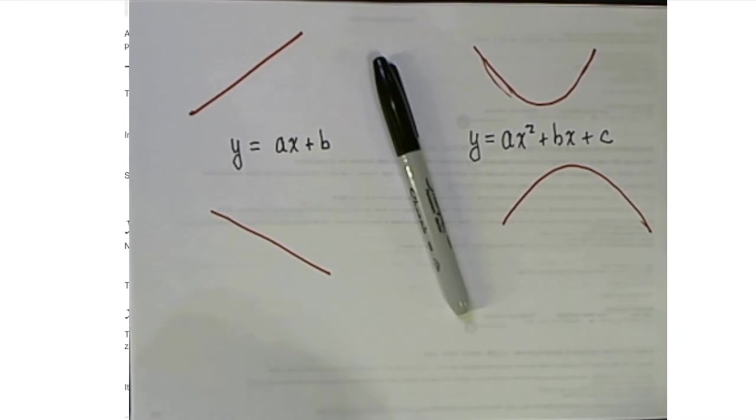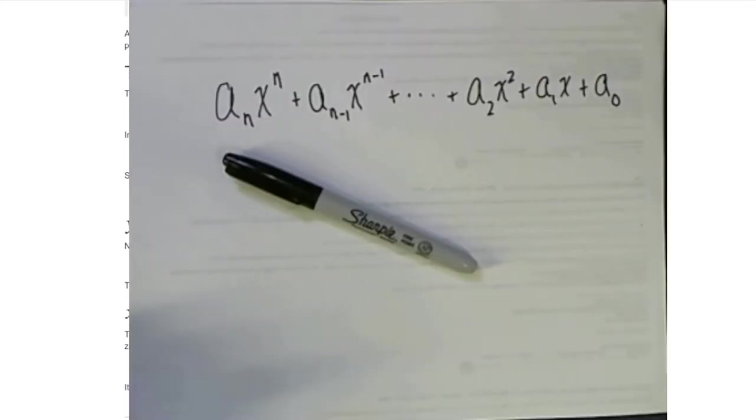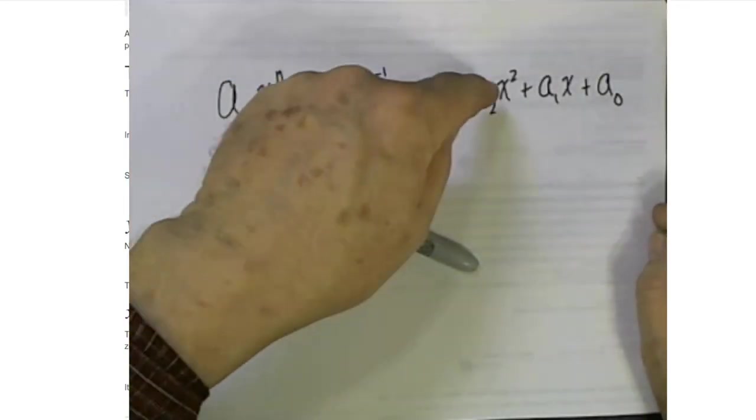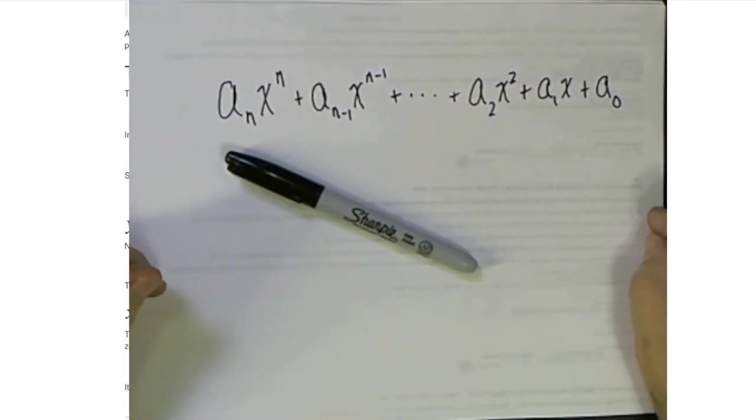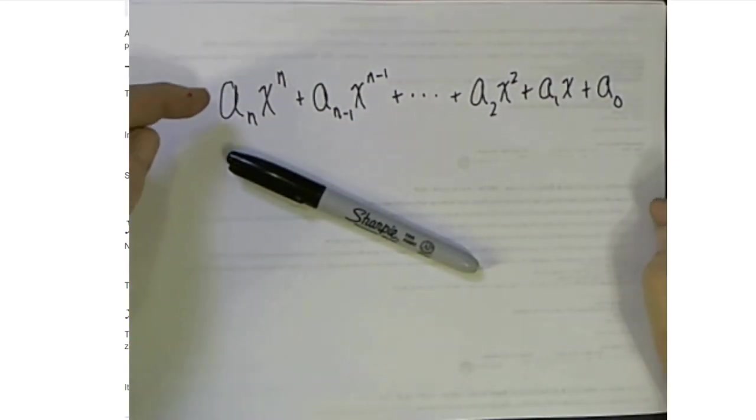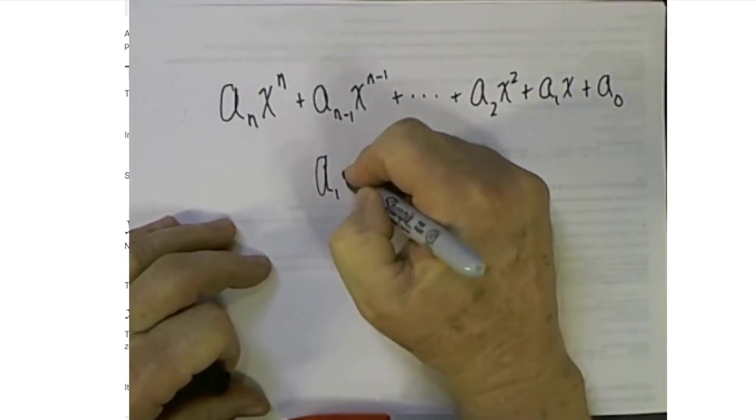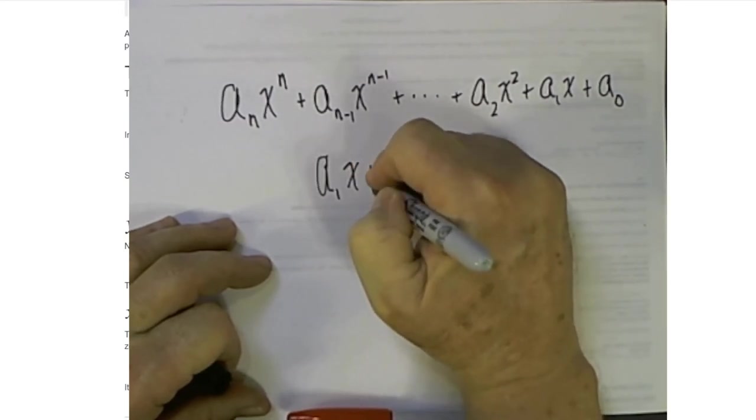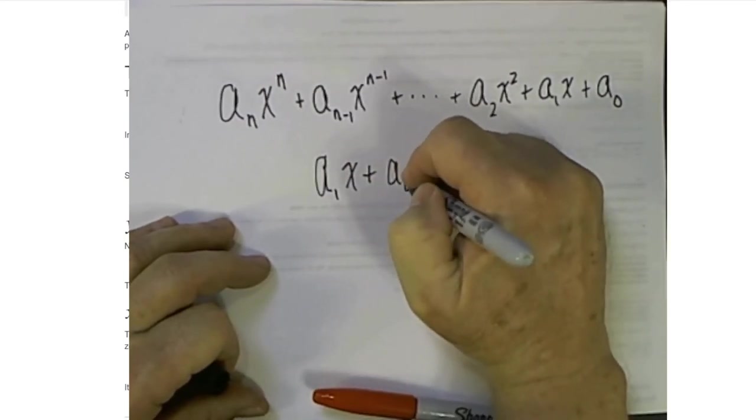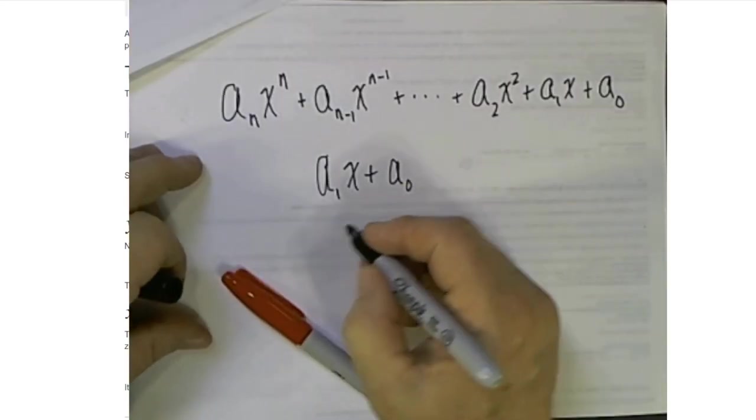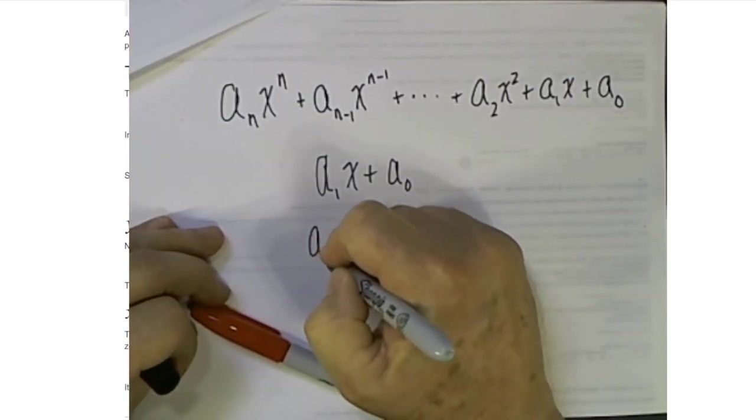Now as we begin to look at more complicated functions of higher degree, we're going to run out of letters of the alphabet. This is a popular scheme for studying polynomials. The coefficients are all labeled by a's with a subscript. For example, if we were looking at a first degree polynomial, we would call that a₁x plus a₀.